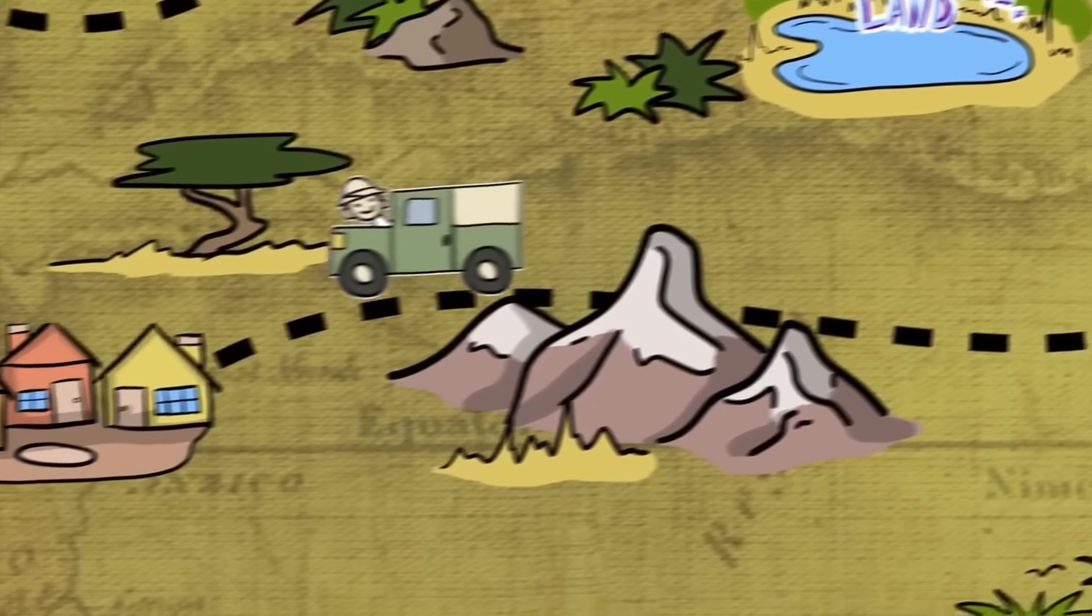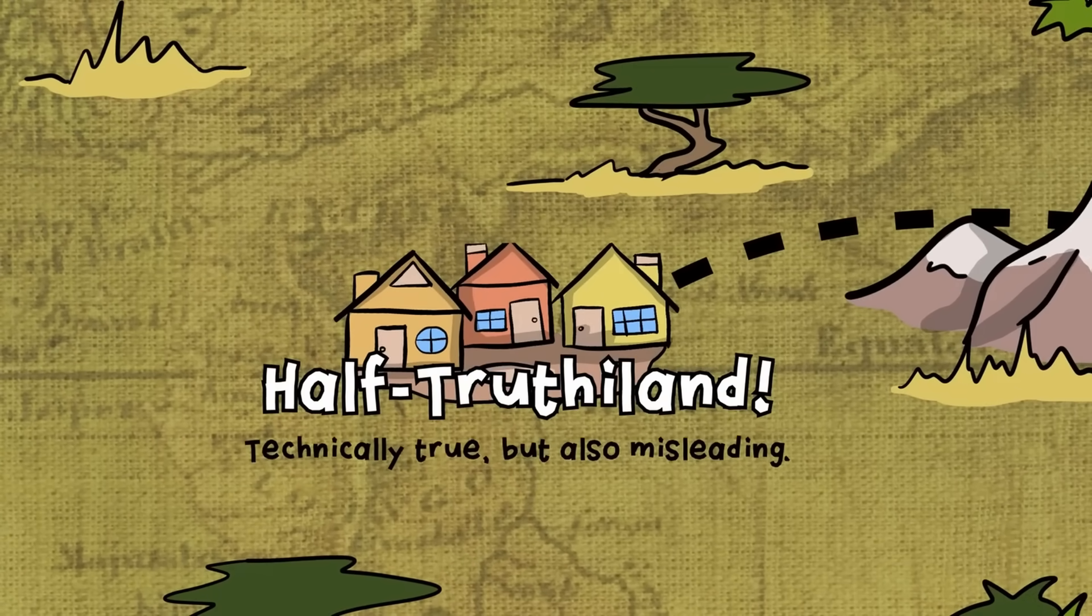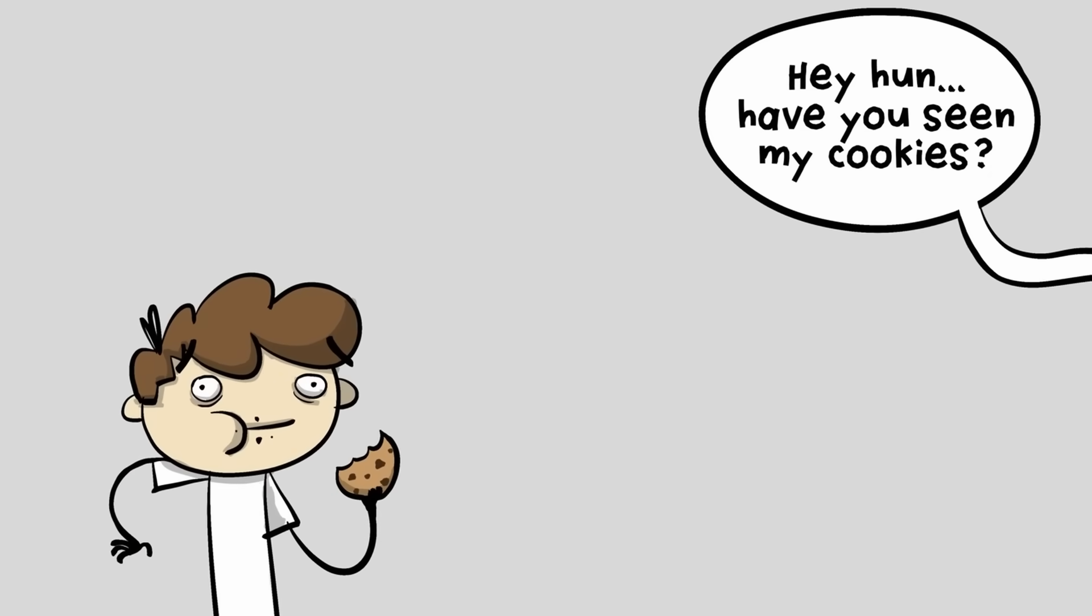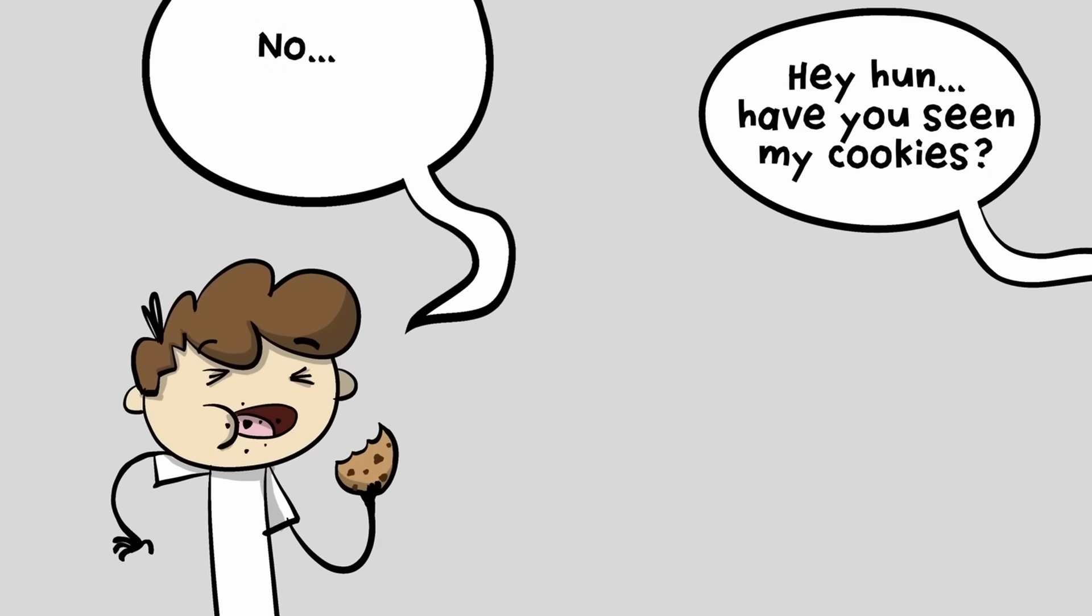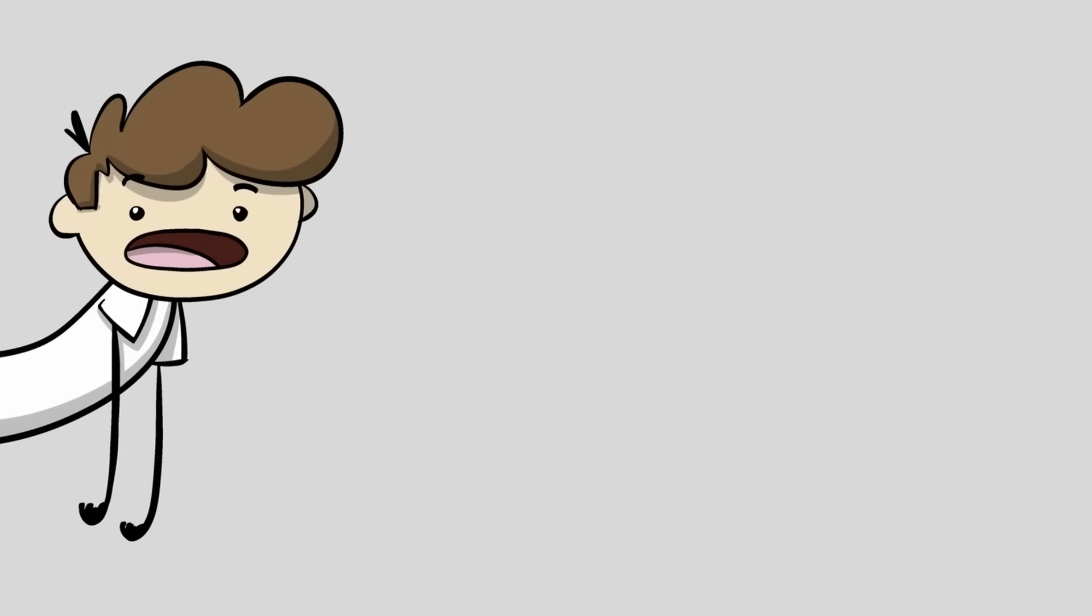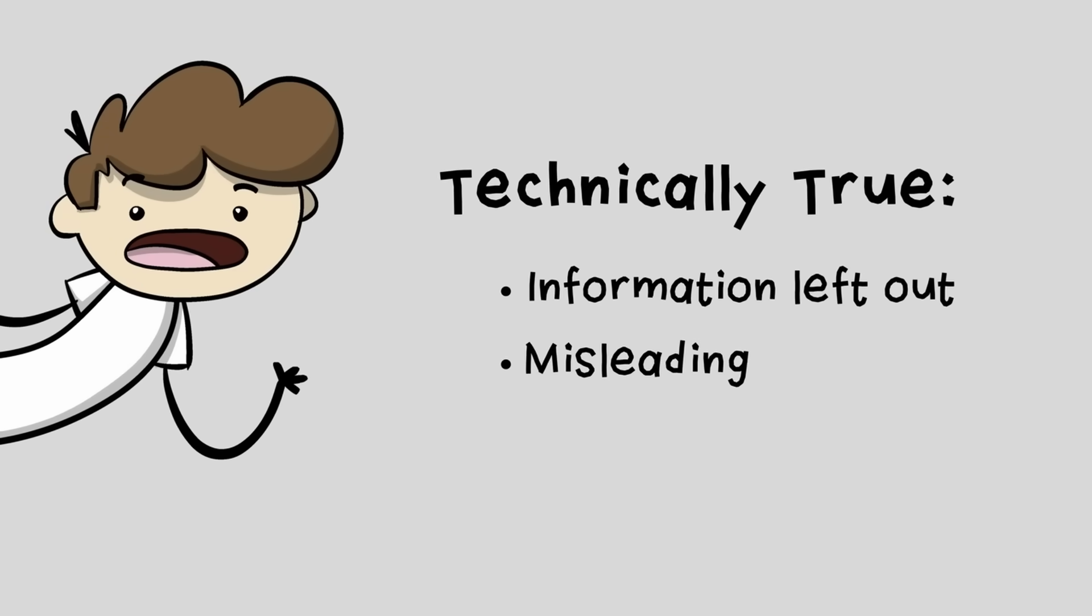All right, you know how to spot storytime. The next place we'll go on our tour of science videos is half-truth-a-land. Technically true, but also misleading. Like this. 'Hey, hon. Have you seen my bookies?' 'No. I don't currently see them.' Technically true. A lot of times, what is said is technically true, but critical information is left out to intentionally or unintentionally mislead people.